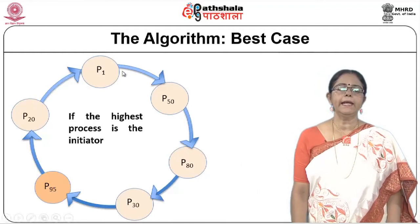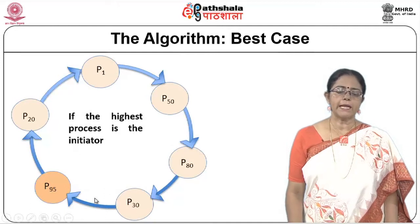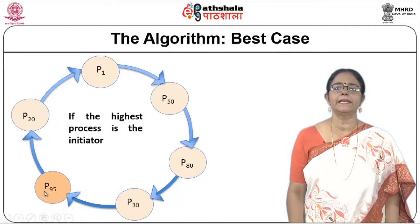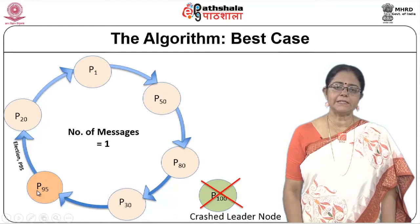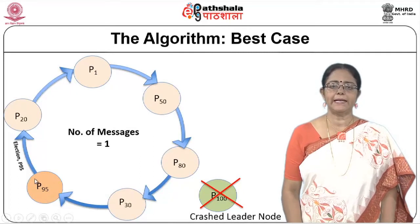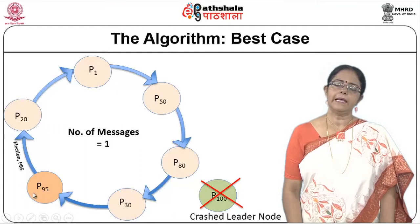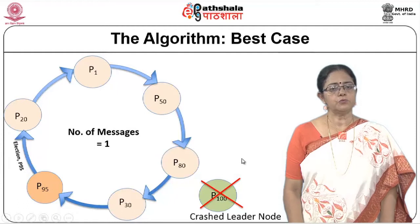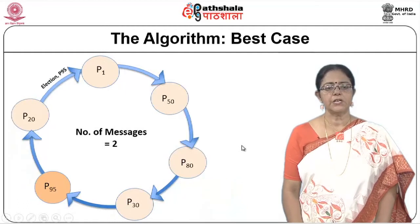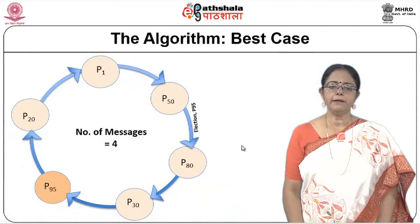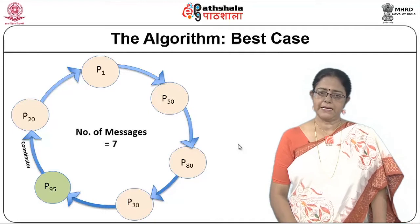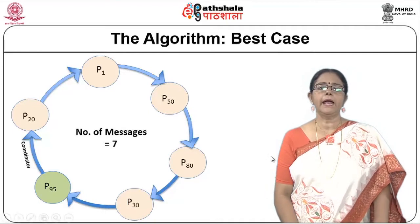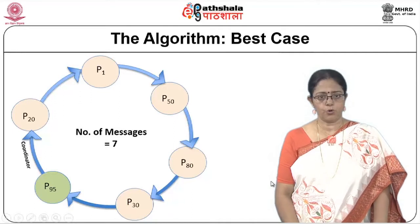In this example, there are 6 nodes and P95 is the highest node. If the crash of the leader node is identified by P95, then it will be the initiator and it will start with the message 'election, P95'. P20 will forward the message, P1 will forward that message and so on, until finally it reaches back to P95. P95 understands that it is the leader and then sends a coordinator message.